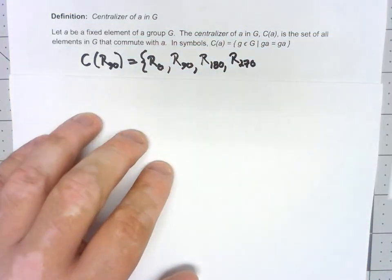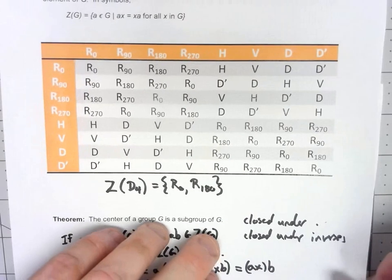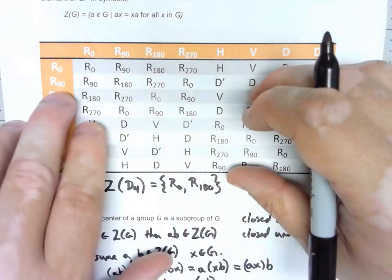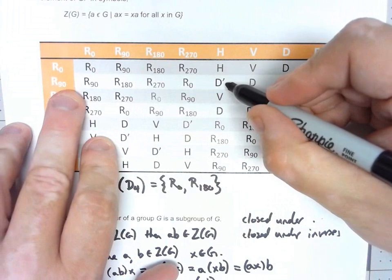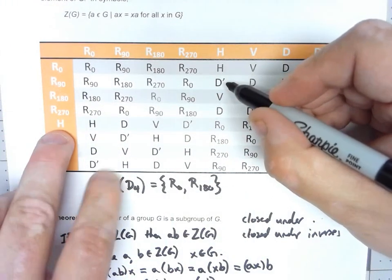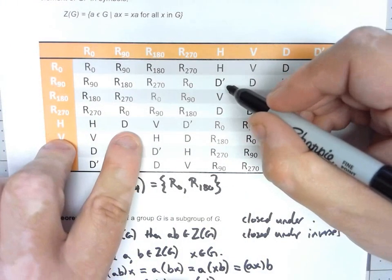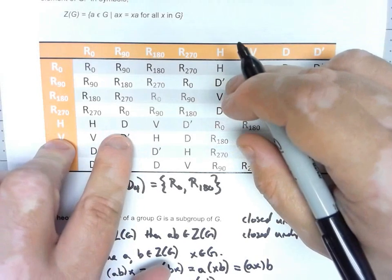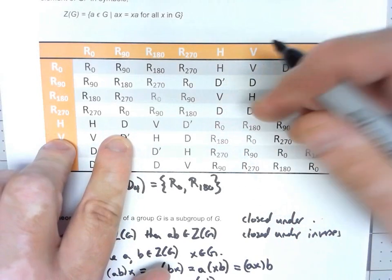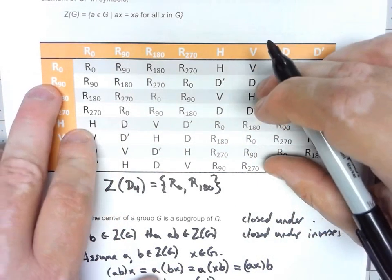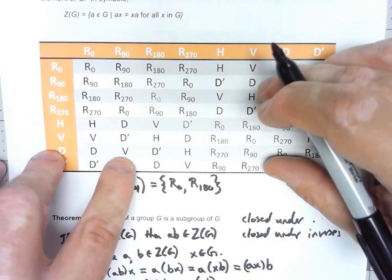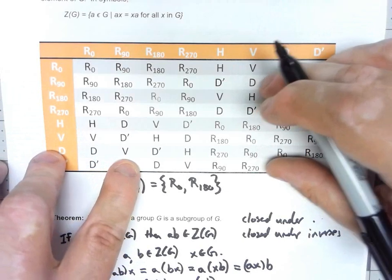What about the reflections? R90 times H is D prime. H times R90 is D. That doesn't commute. R90 times V doesn't commute either.